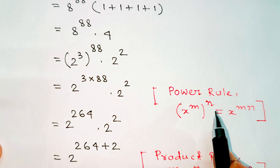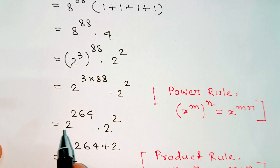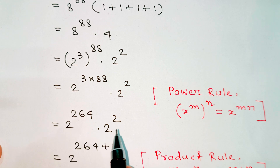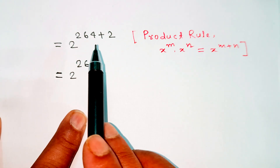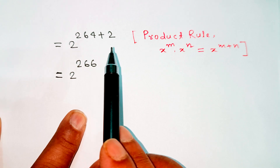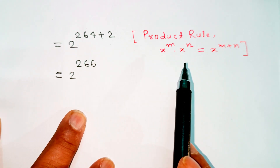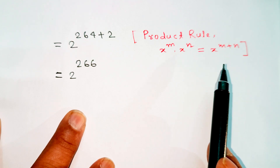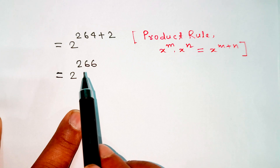Using the power rule, x to the power m to the power n equals x to the power mn, we get 2 power 264 into 2 squared. Then applying the product rule, x to the power m into x to the power n equals x to the power m plus n, we get 2 power 264 plus 2, which equals 2 power 266.